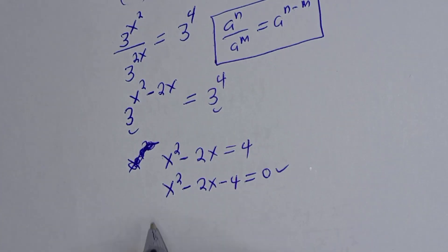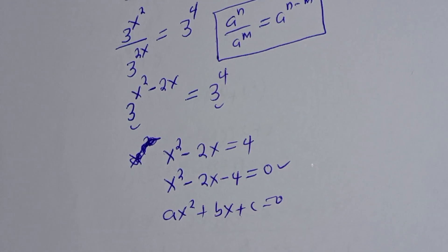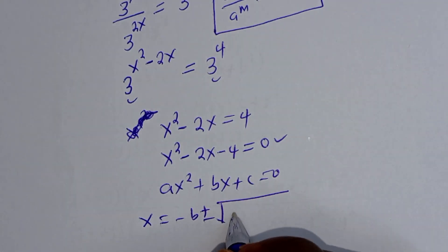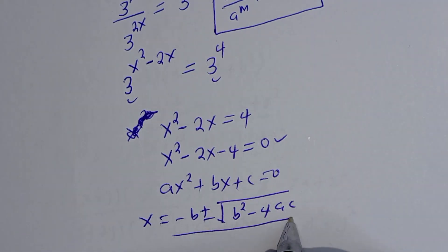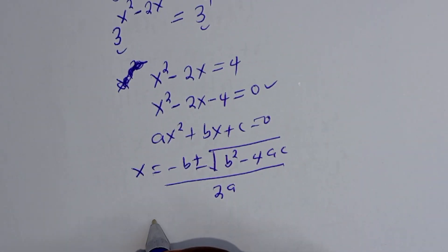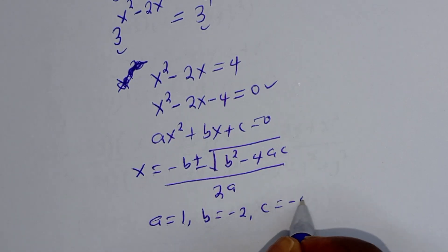Let's solve this using the quadratic general formula. From the quadratic general formula, we have ax squared plus bx plus c equal to 0, and x is equal to minus b plus or minus square root of b squared minus 4ac, over 2a. From this equation, a is equal to 1, b is equal to minus 2, c is equal to minus 4.